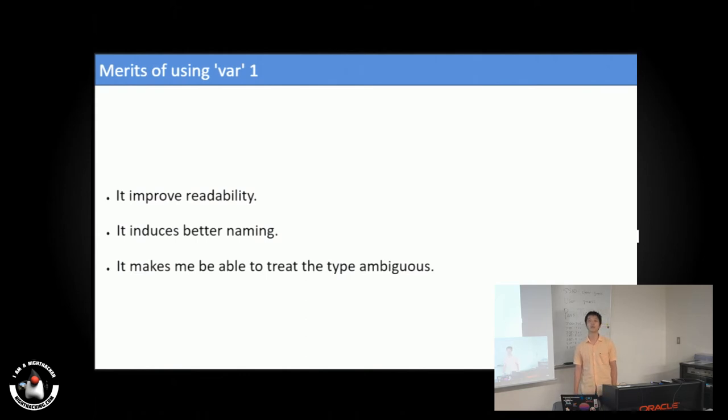The programmer must compensate the information with other parts. And if the precise type is not important, it allows me to treat the type ambiguously.